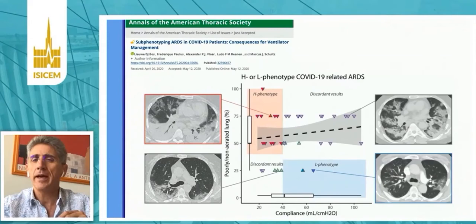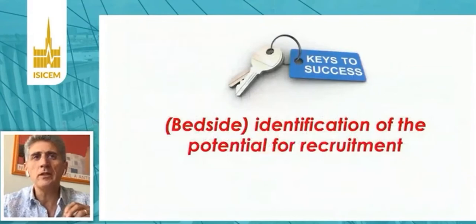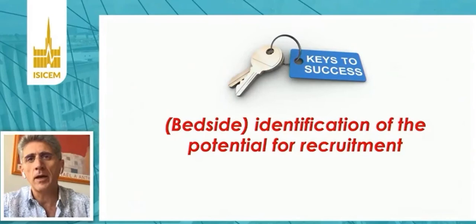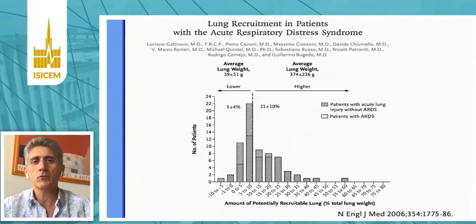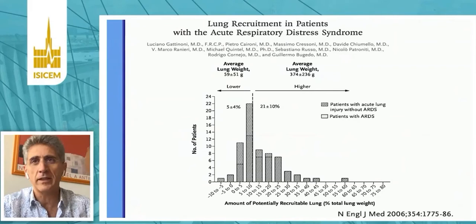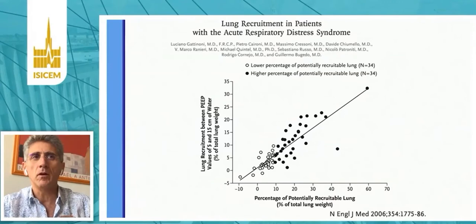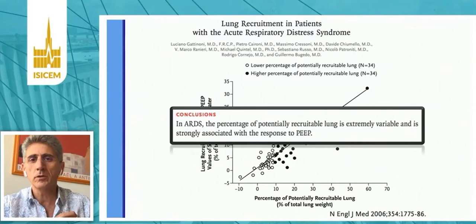This points out the fact that we really need tools to perform a bedside assessment of the potential for lung recruitment. We've known for a very long time in ARDS patients that this potential for lung recruitment is extremely variable from one patient to another. You will find a greater amount of potentially recruitable lung in patients with ARDS compared to patients with acute lung injury. There is a nice correlation between the percentage of potentially recruitable lung and the lung recruitment measured between PEEP values of 5 and 15 cmH2O — that was the most important conclusion of this paper published almost 15 years ago.